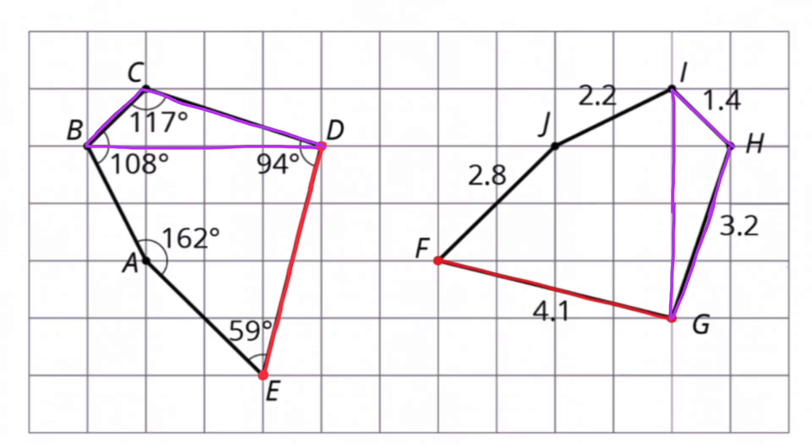Segment B.C. and segment H.I. are congruent. And segment C.D. and G.H. are also the same length, so they're congruent.